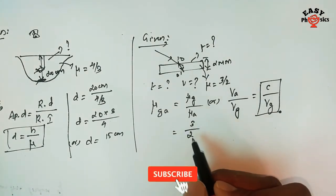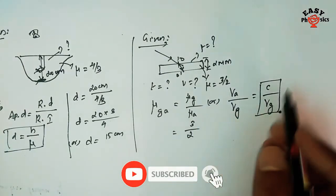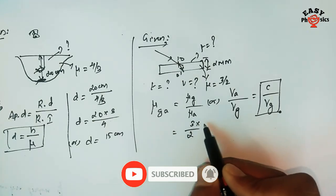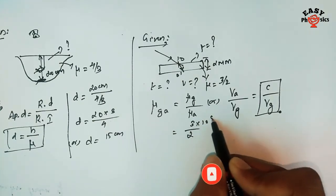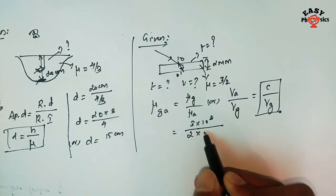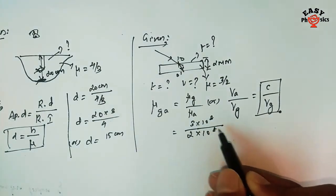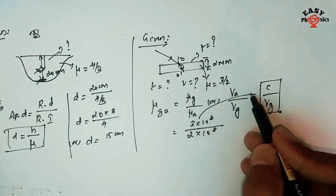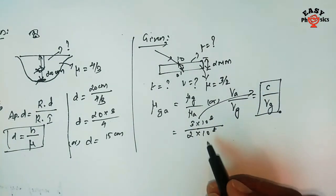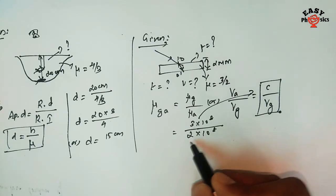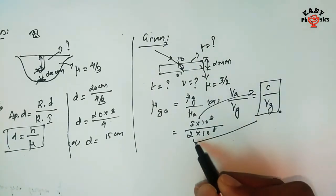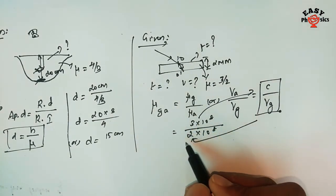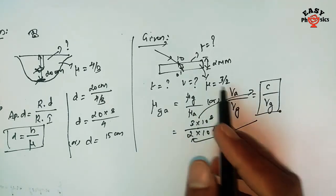So, 3 by 2 equals 3 × 10⁸ meters per second divided by v_g, giving v_g = 2 × 10⁸ meters per second. Here, 3 × 10⁸ m/s is the velocity of light in air, and v_g is the velocity of light in glass.